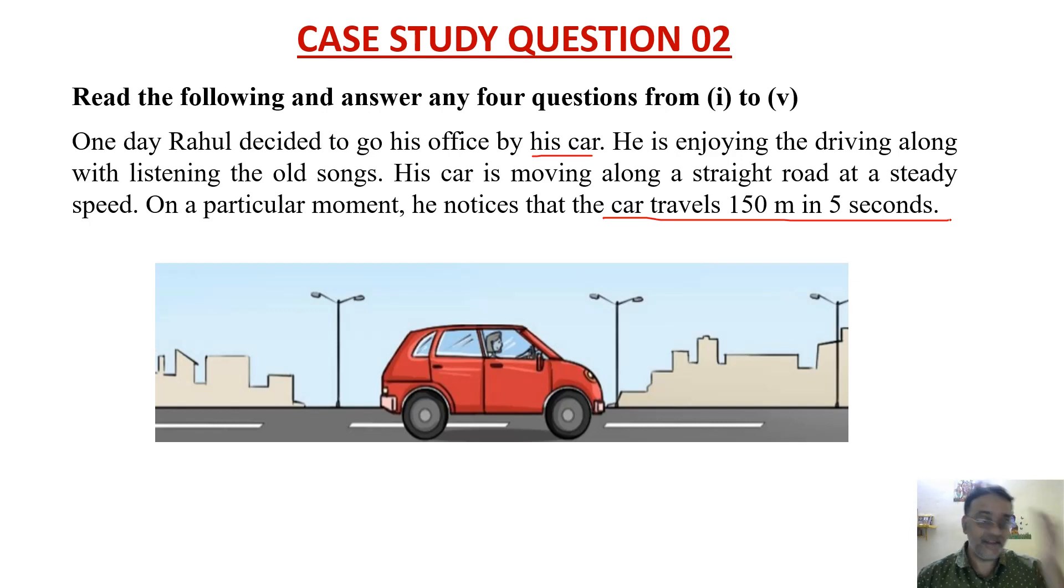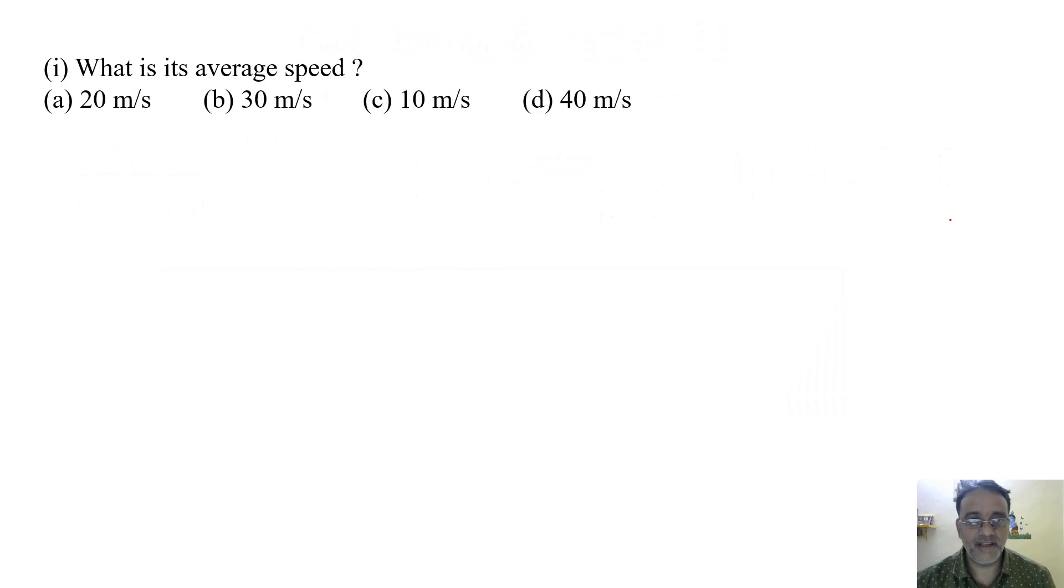Based on this context, now questions have been framed. So let us start with the first question. What is its average speed? 150 meters in 5 seconds is given. The average speed formula is total distance traveled upon total time taken. So in the context, 150 meters in 5 seconds is given. 150 upon 5 is 30 meters per second. So the correct option is B.